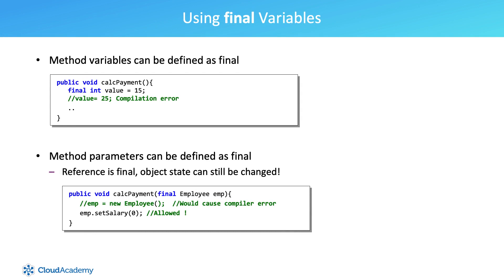Variables declared within the scope of a method can also be declared as final. Once these variables have been given a value, the value cannot be changed. Method parameters can also be defined as final — by doing so, it becomes impossible to assign a different value or reference to the parameter. Note that while final fields cannot be changed, remember that object references are just references, not a copy of the object.